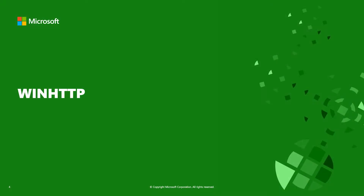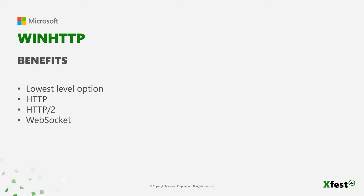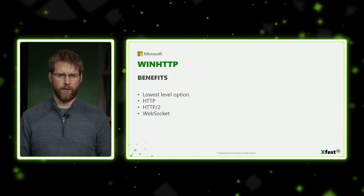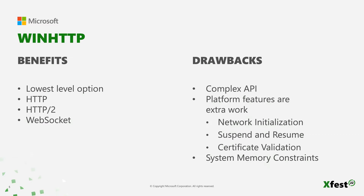Our first library we provide is WinHttp. This is a library that's been around on Windows for a long time, so it's a very mature library. It's the lowest-level option that we provide. It gives a lot of options for configuring your requests for HTTP2, HTTP, and WebSockets. However, it is a very complex API. A very simple GET request can take about 1,000 lines of code. It does not have any knowledge about anything on the Xbox platform, as this library was just brought over from Windows. So things like network initialization, suspend and resume, or certificate validation are not handled for your title automatically.